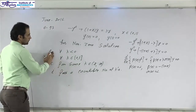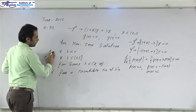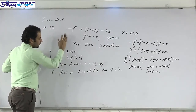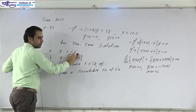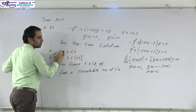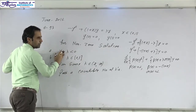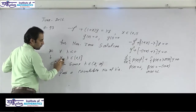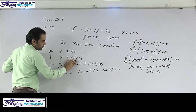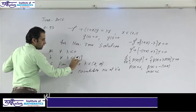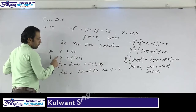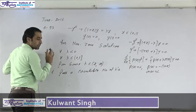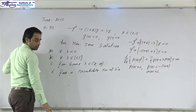For option A, if there exists a non-zero solution for every lambda less than 0, that implies there are uncountably many eigenvalues, which is not possible. Similarly for option B, if for every lambda in [0, 1] there is a non-zero solution, again there would be uncountably many eigenvalues, so option B is also not possible.